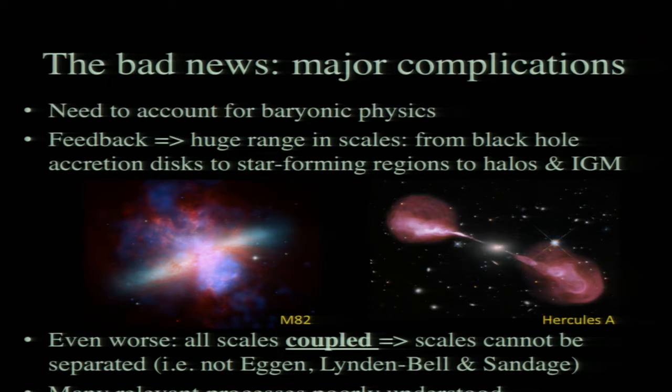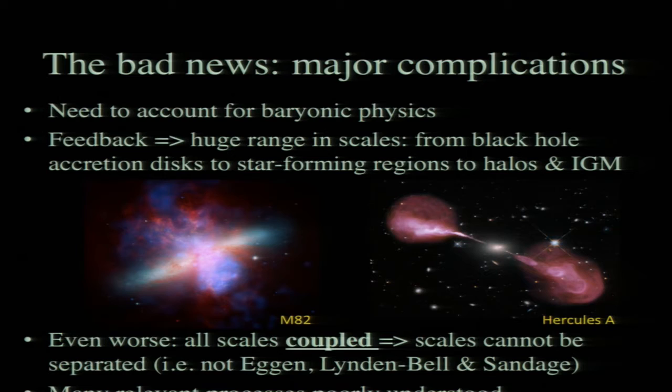What's complicated the picture even further is the process of feedback. Here are a couple of examples where we can see this process operating directly. This galaxy is what's called a starburst galaxy—a disk or spiral galaxy like ours. Superposed on its stellar light is emission from hot ionized gas being driven out of the center. We think this is caused by rapid star formation happening at the center and the release of large amounts of energy through supernovae and radiation from hot young stars driving these outflows.